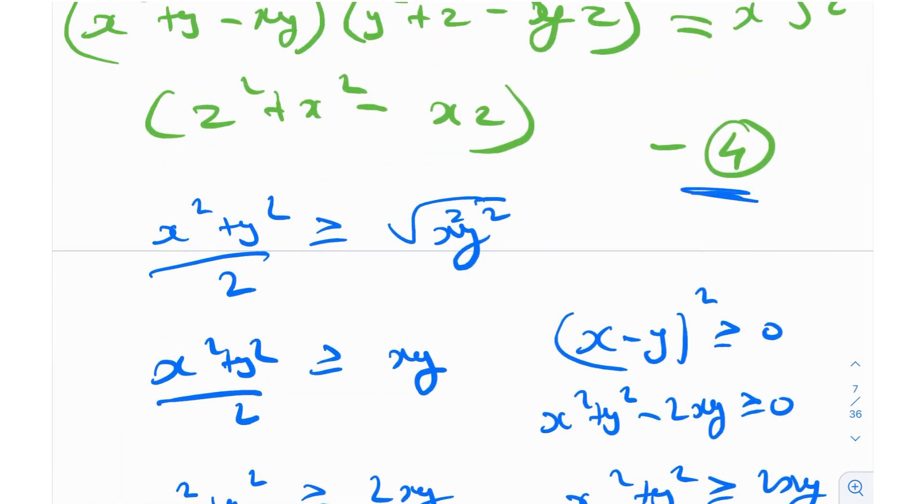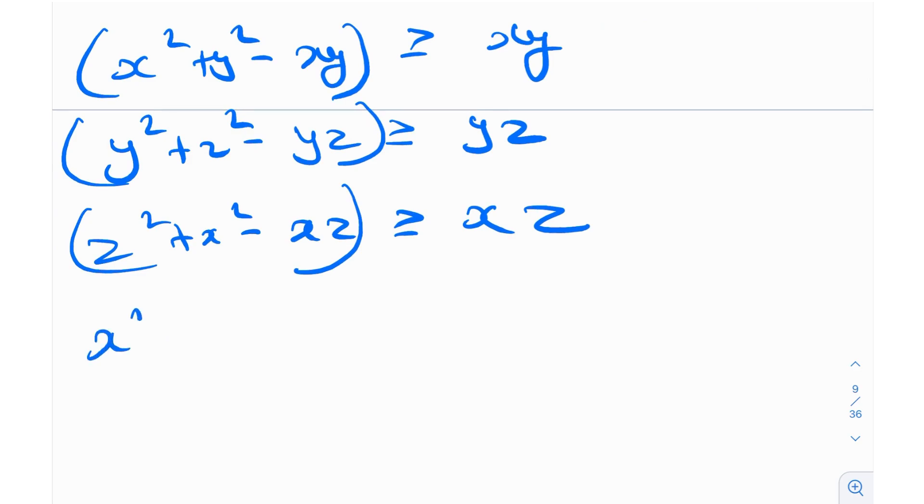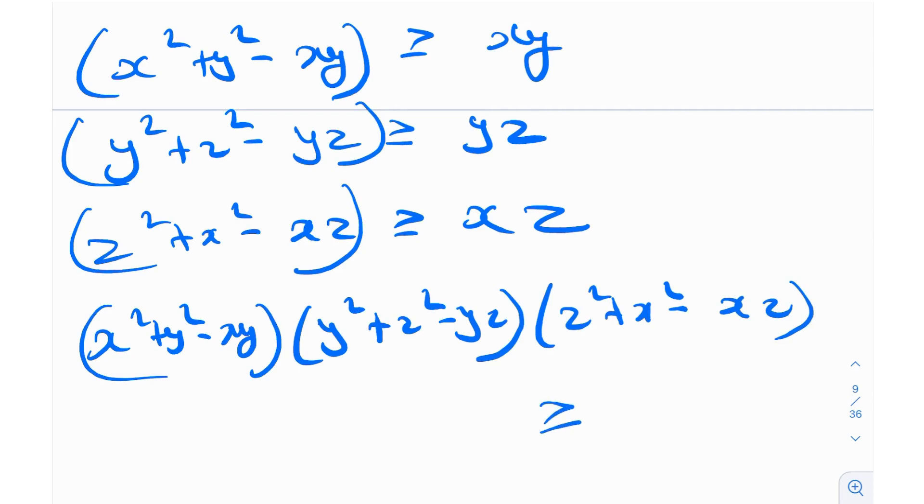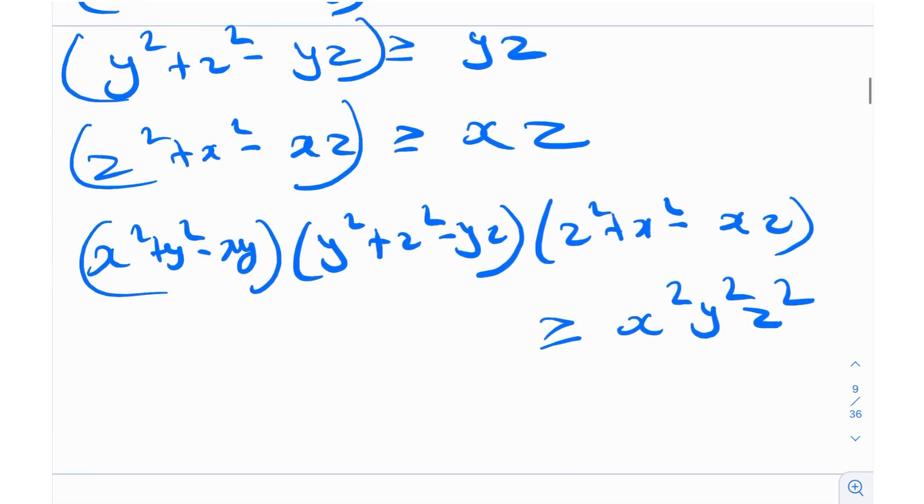Now, if you just notice this equation number 4, what is the equation number 4? It's just a product of these three quantities. So basically, x squared plus y squared minus xy times y squared plus z squared minus yz times z squared plus x squared minus xz is greater than or equal to xy times yz times xz, which is x squared y squared z squared. Well, that's very fascinating because in equation number 4, we have the same thing. We have the same terms. We have the exact same terms, just that we do not have an inequality. We rather have an equality.